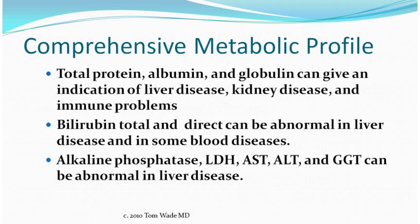The total protein, albumin, and globulin can all point to a liver problem, a kidney problem, or an immune disease. The total direct bilirubin can be abnormal in liver disease and in some blood diseases. The alkaline phosphatase, LDH, AST, ALT, and GGT can be abnormal in liver disease.